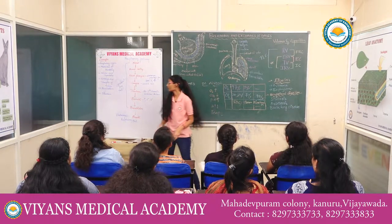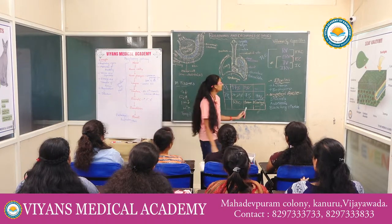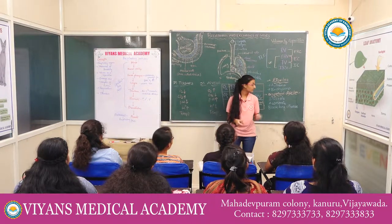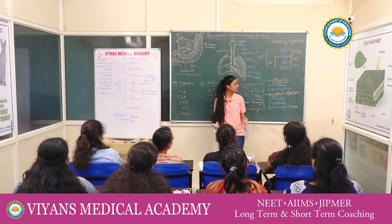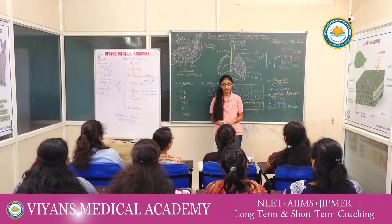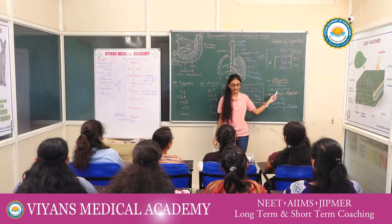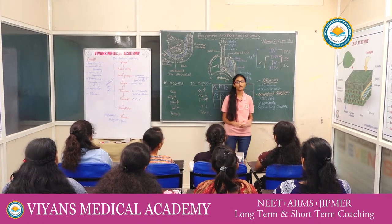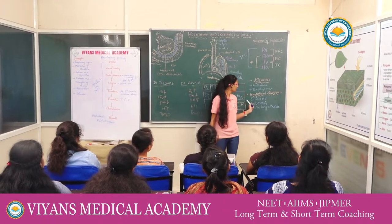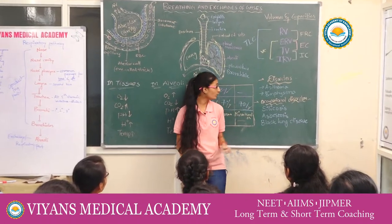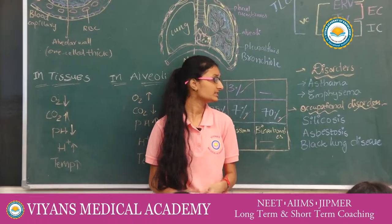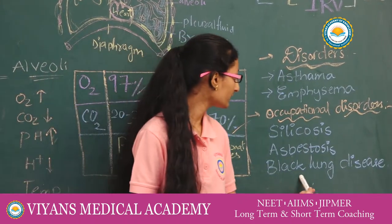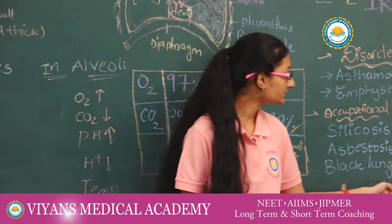The last topic is disorders of the respiratory organs. Asthma is difficulty in breathing due to inflammation of the bronchi and bronchioles. Emphysema is a chronic disorder caused in people addicted to cigarette smoking. Occupational disorders are seen in people who work in industries, mines, and quarries — for example, silicosis is caused in people who work in silicon industries, asbestosis in people who work in cement and asbestos industries, and black lung disease is seen in people who work in coal mines.